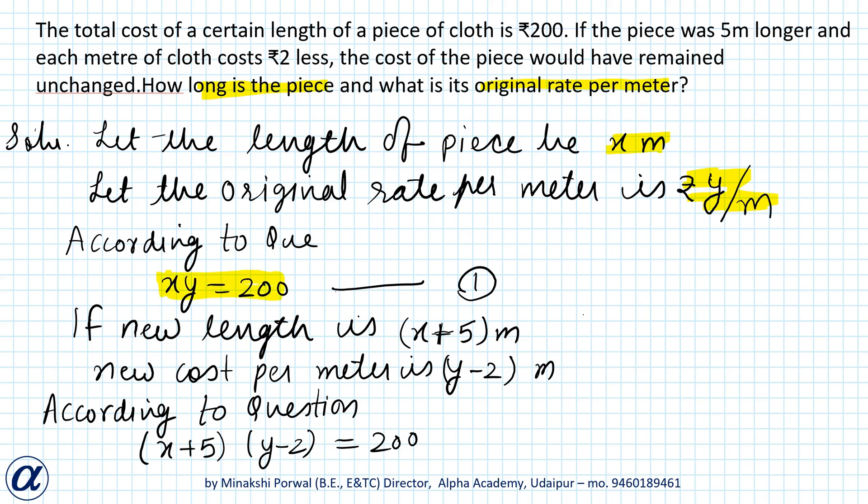Now if length is increased, that is length becomes x plus 5, and cost per meter is reduced by 2, so the new equation becomes (x + 5) into (y - 2) equals to 200, because cost of piece remains unchanged.